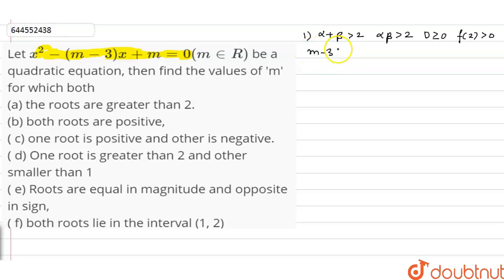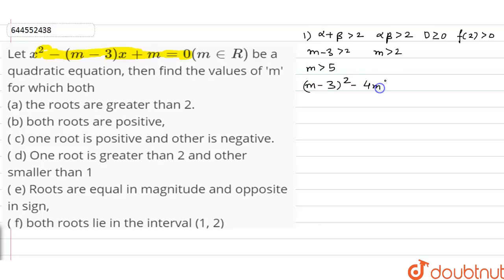For the condition alpha plus beta greater than 2: minus b by a, that is m minus 3, should be greater than 2, so m should be greater than 5. For alpha beta greater than 2: c by a should be greater than 2, so m should be greater than 2. For D greater than or equal to 0: (m minus 3) squared minus 4m should be greater than or equal to 0, which gives m squared minus 10m plus 9 greater than or equal to 0, factoring as (m minus 1)(m minus 9) greater than or equal to 0.